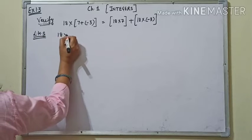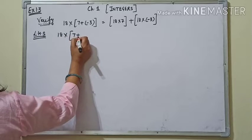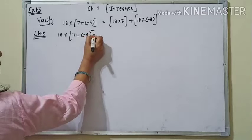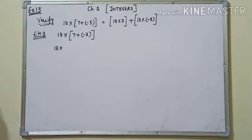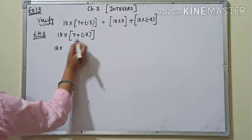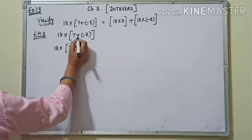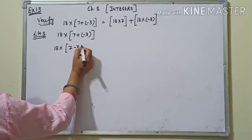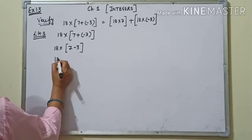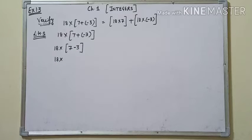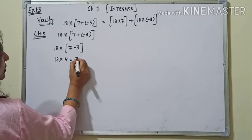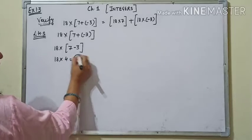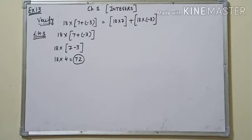LHS: 18 multiply (7 + (-3)). हमारा rule क्या कहता है? सबसे पहले हम small bracket open करते हैं। 7 plus minus 3 equals 7 minus 3 = 4. 18 multiply 4 is equal to 72. तो LHS का answer हमारा आ गया 72।